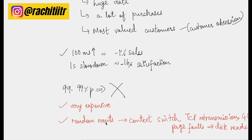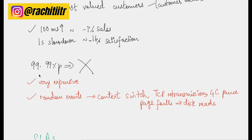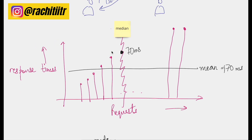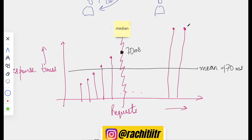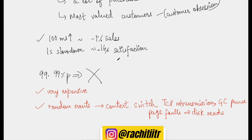The next question is: why not go one step further and care about the four nines — the 99.99th percentile? Well, this is very expensive. Also, there will always be random events happening in the system, like context switches, TCP transmission issues, garbage collector pauses, or page faults leading to disk reads. As you increase the percentile you reach the higher end of the sorted array, and the 99.99th percentile might include just two or three of the last requests, which may have been affected by these random events — making them impossible to always control.